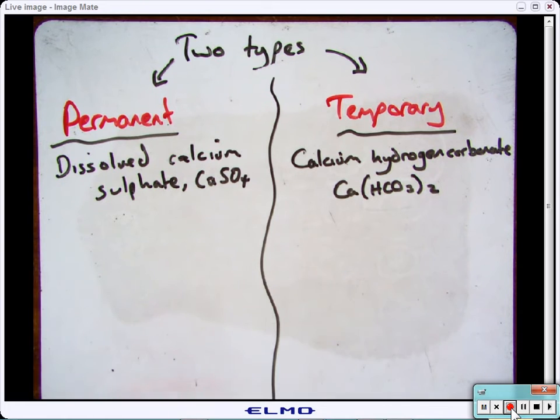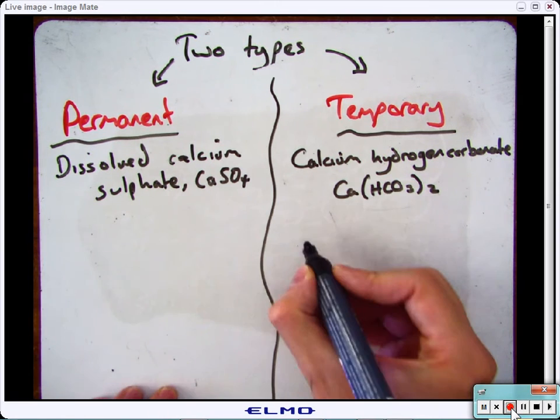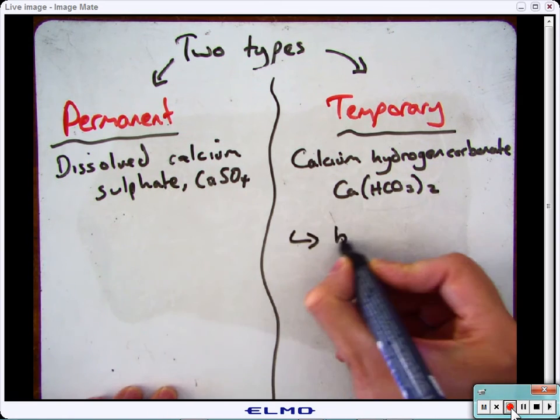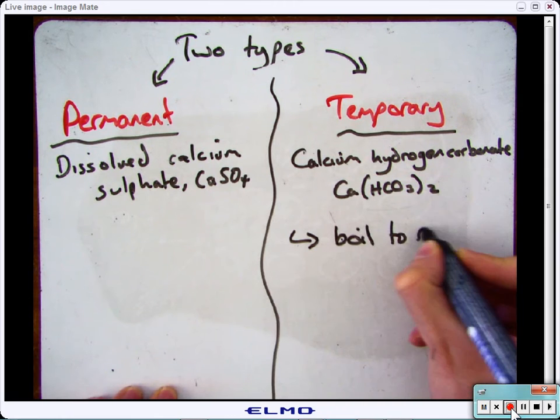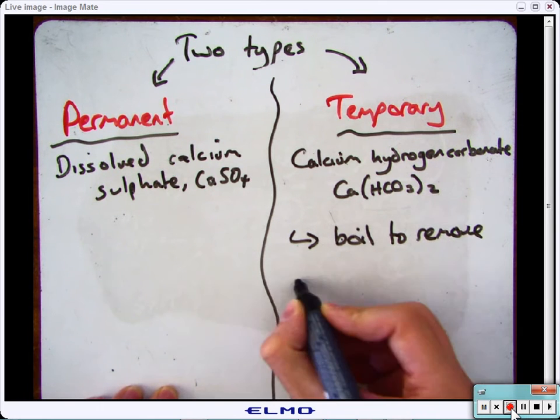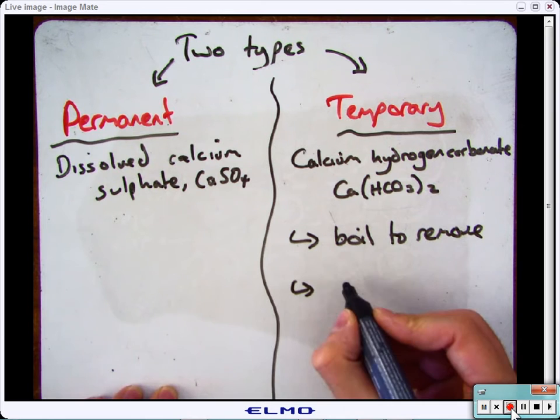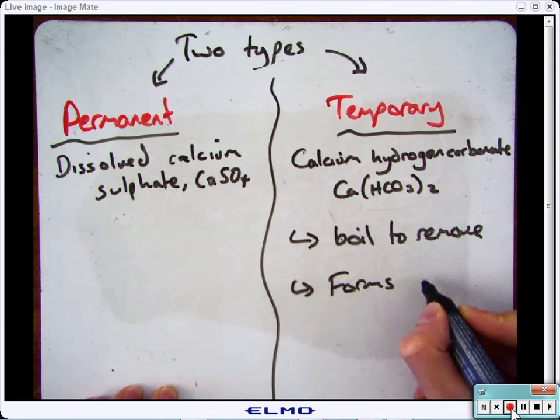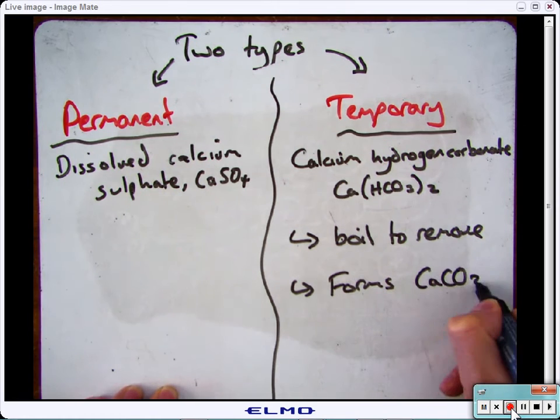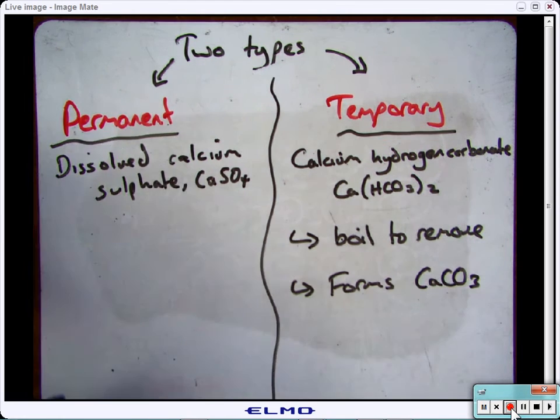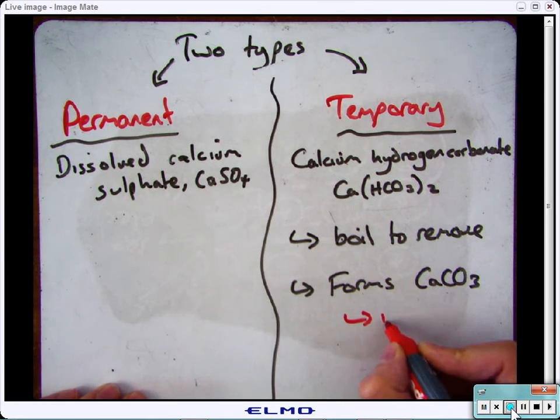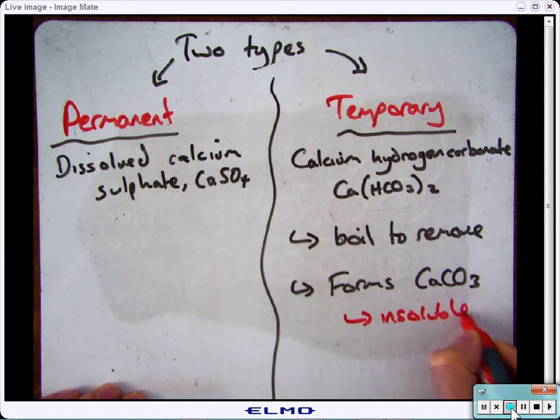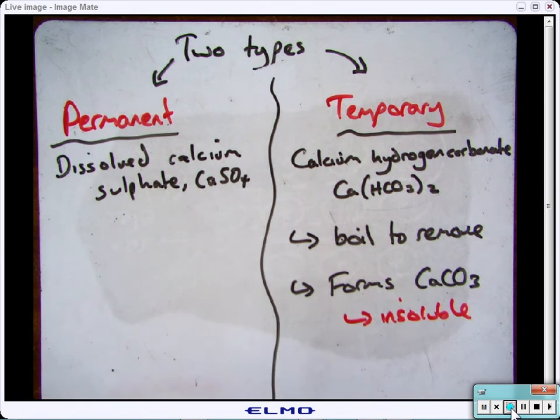Temporary hardness is removed by boiling. This turns the calcium hydrogen carbonate into calcium carbonate. The calcium carbonate is a precipitate and can be removed from the solution.